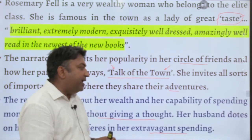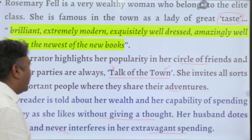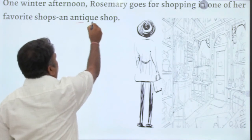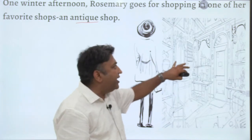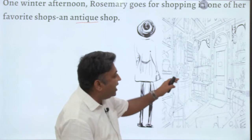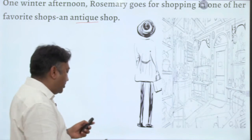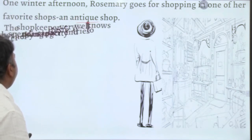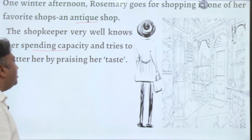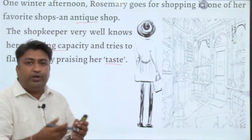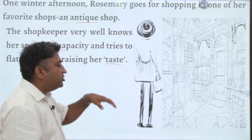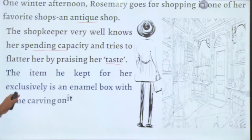Her husband dotes on her and never interferes in her extravagant spending. One winter afternoon, Rosemary goes shopping at one of her favorite antique shops — a shop where luxury items belonging to an older, elite class are sold at very high cost. The shopkeeper knows her spending capacity and tries to flatter her, praising her taste, saying things like 'oh ma'am, only you can understand the value of this thing.'